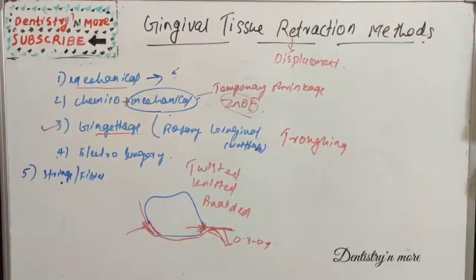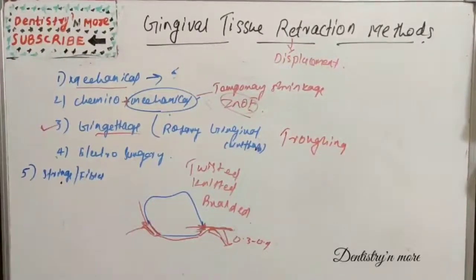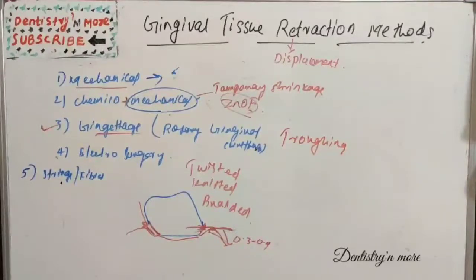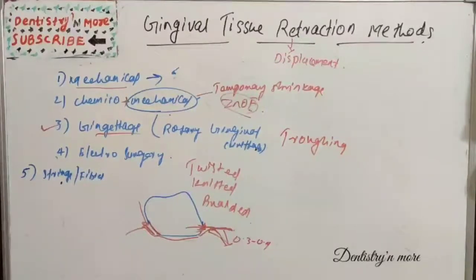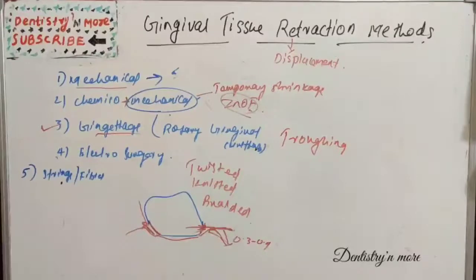The main contraindications for gingertach are patients with cardiac pacemakers or insulin pumps, very fine marginal gingiva with little or no attached gingiva, presence of flammable anesthetics or agents, and delayed healing due to debilitating disease or radiation therapy.